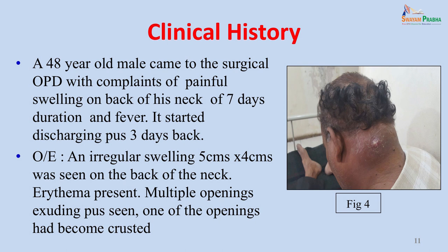A 48-year-old male came to the surgical OPD with complaints of painful swelling on the back of his neck of 7 days duration and fever, and had started discharging pus 3 days back. On examination, an irregular swelling 5 cm by 4 cm was seen on the back of the neck, showing erythema and warm to touch. Multiple openings exuding pus were seen, one of which had become crusted. On general examination, the patient was febrile with a temperature of 100°C, pulse 100 per minute, and respiration regular and normal with no systemic abnormality detected.